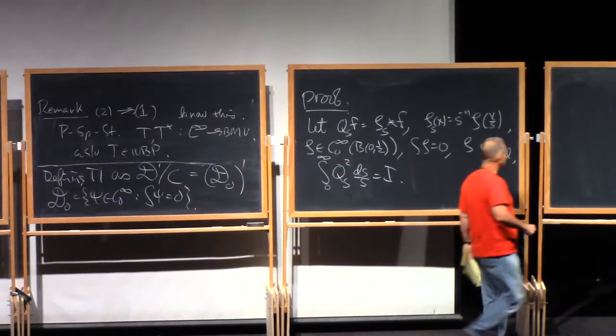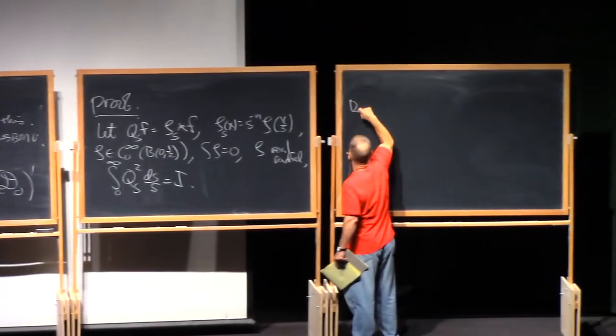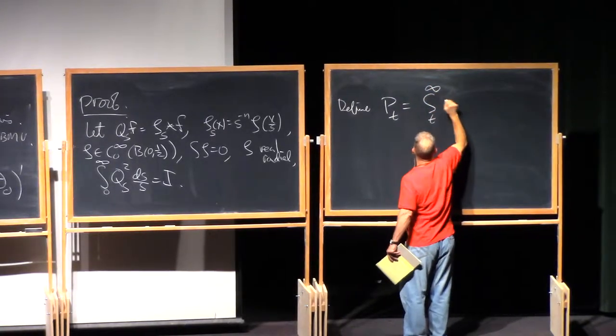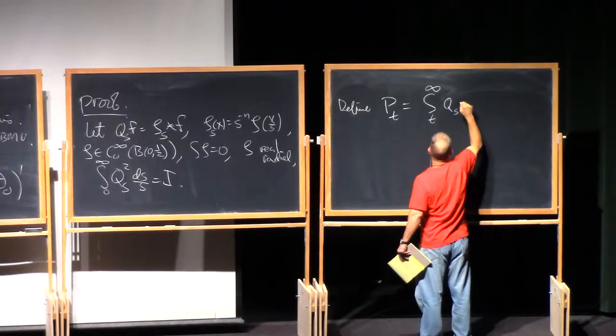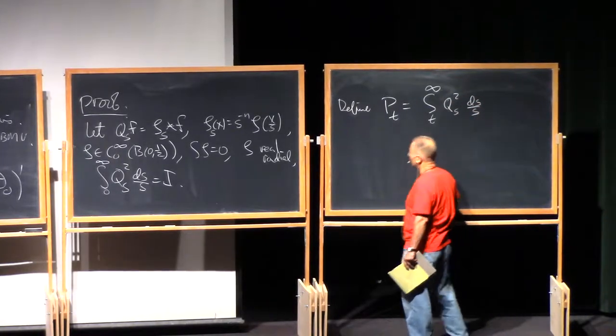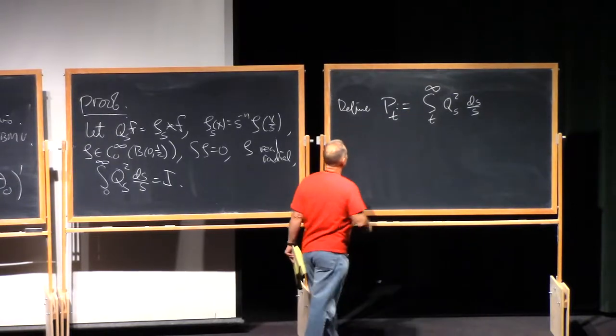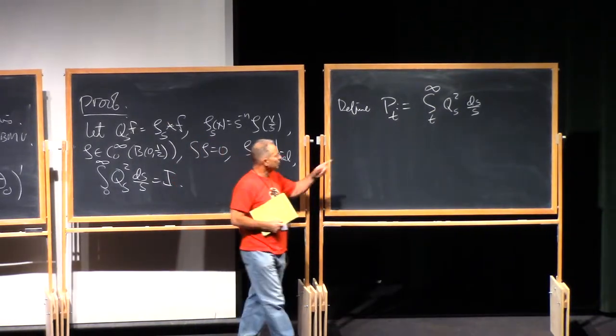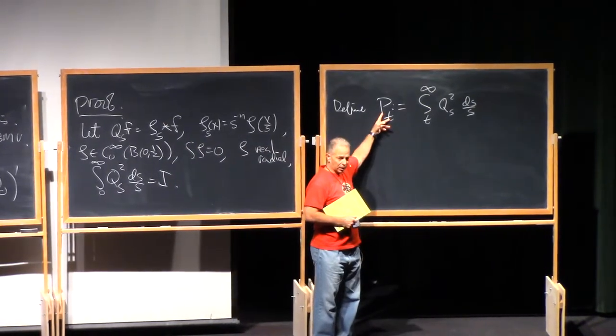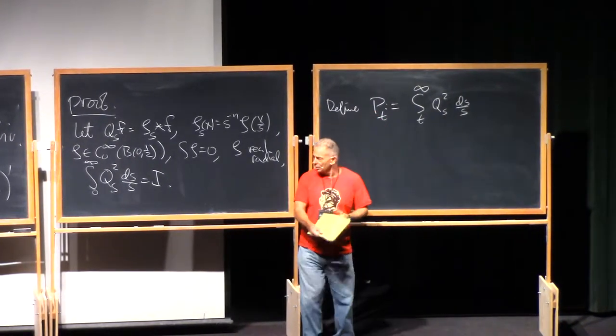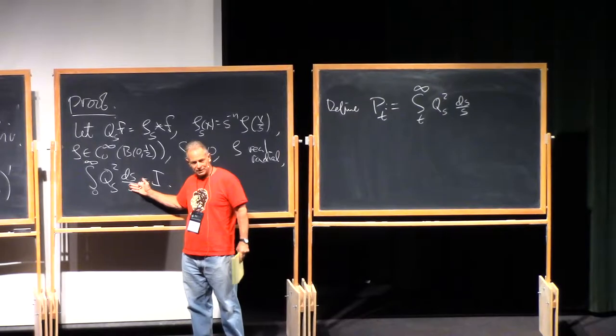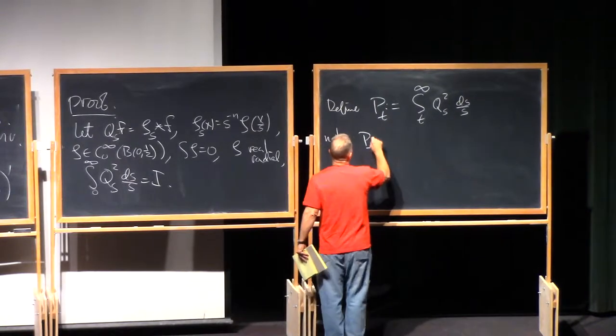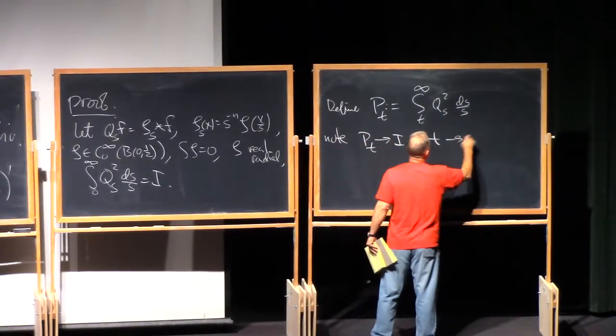So now, I'm going to define an operator PT, which is going to be this integral from 0 to infinity of Qt T Qt dt over t. And it turns out, well, first of all, notice that as t goes to zero, this guy is approximating the identity, at least in L2, because that's the meaning of this statement.